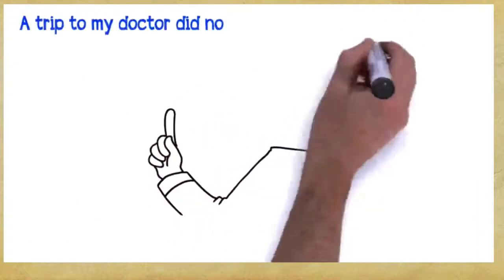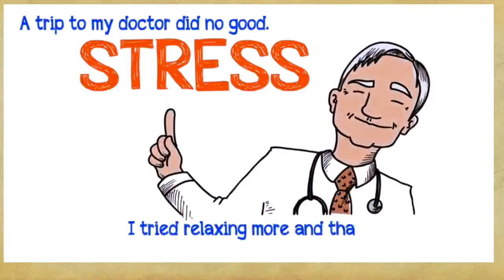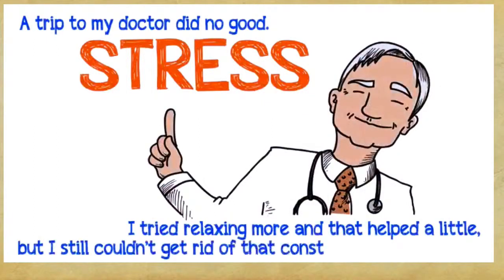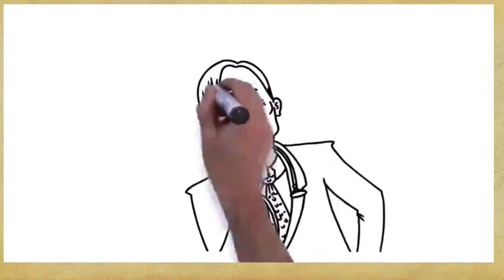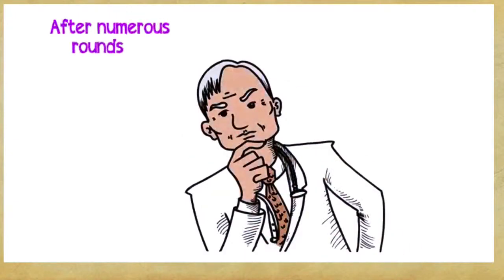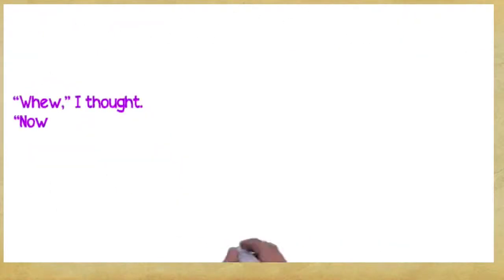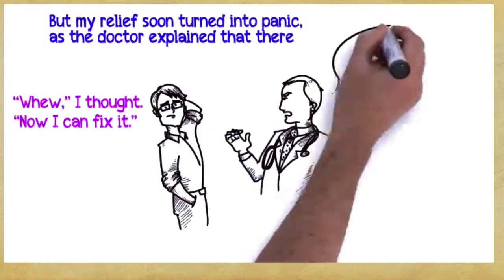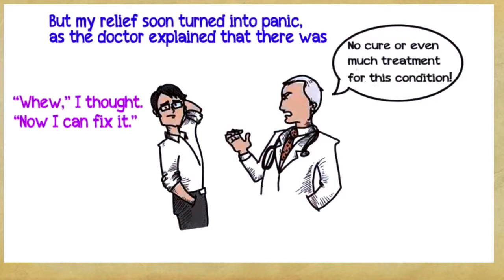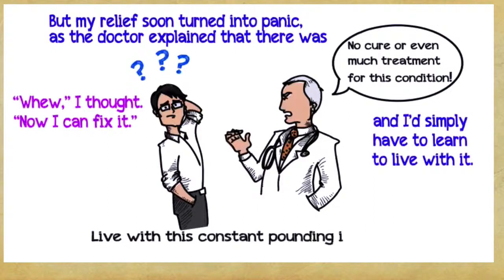A trip to my doctor did no good. He thought it was just a migraine induced by stress. I tried relaxing more, and that helped a little, but I still couldn't get rid of that constant buzz in my ears. Several weeks later, the doctor began to suspect that something was indeed wrong and initiated a series of tests. After numerous rounds of tests, I finally had a diagnosis: Tinnitus. Phew, I thought, now I can fix it. But my relief soon turned into panic, as the doctor explained there was no cure or even much treatment for this condition, and I'd simply have to learn to live with it. Live with this constant pounding in my head, I thought? How in the world am I going to do that?